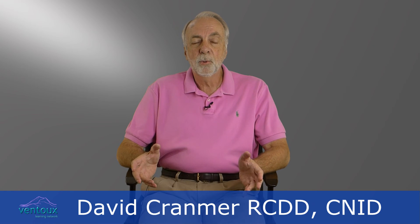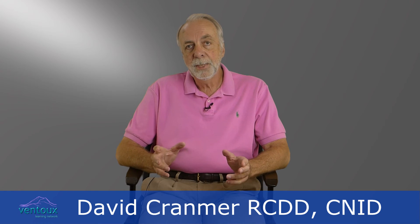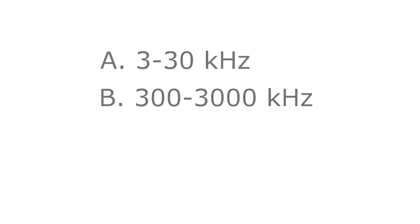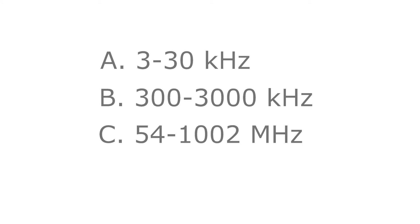Each week I'll end with a question. For today I'm asking: where does CATV video fall in the spectrum of frequency bands? Is it A, 3 to 30 kilohertz? B, 300 to 3000 kilohertz? C, 54 to 1002 megahertz? Or D, 3 to 30 gigahertz?